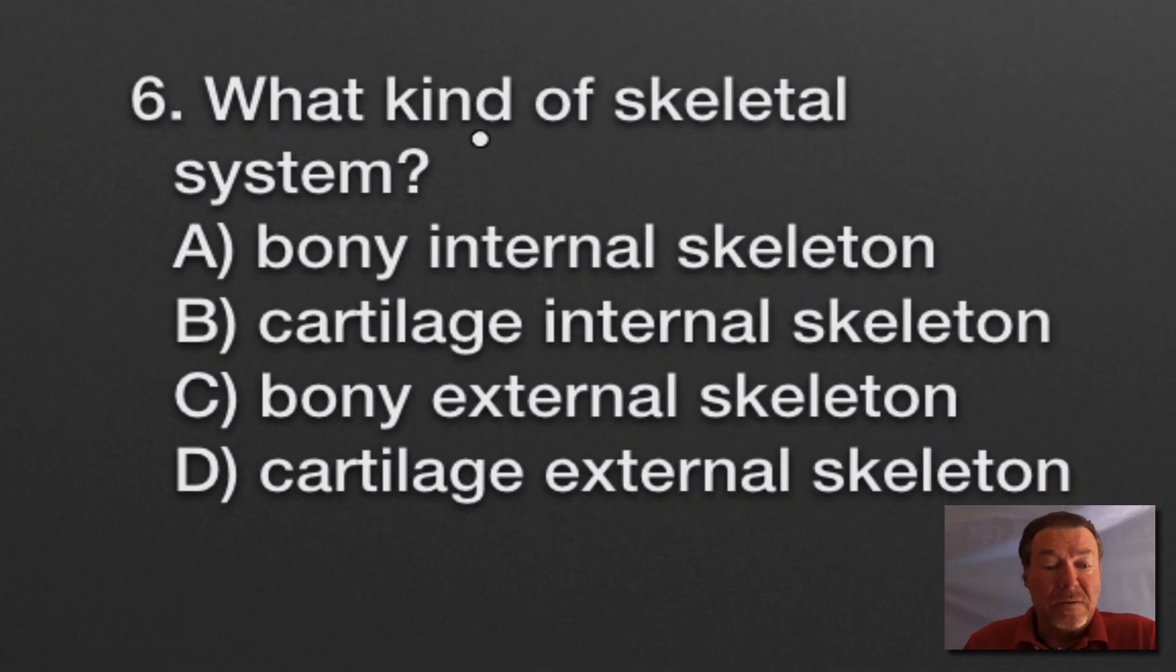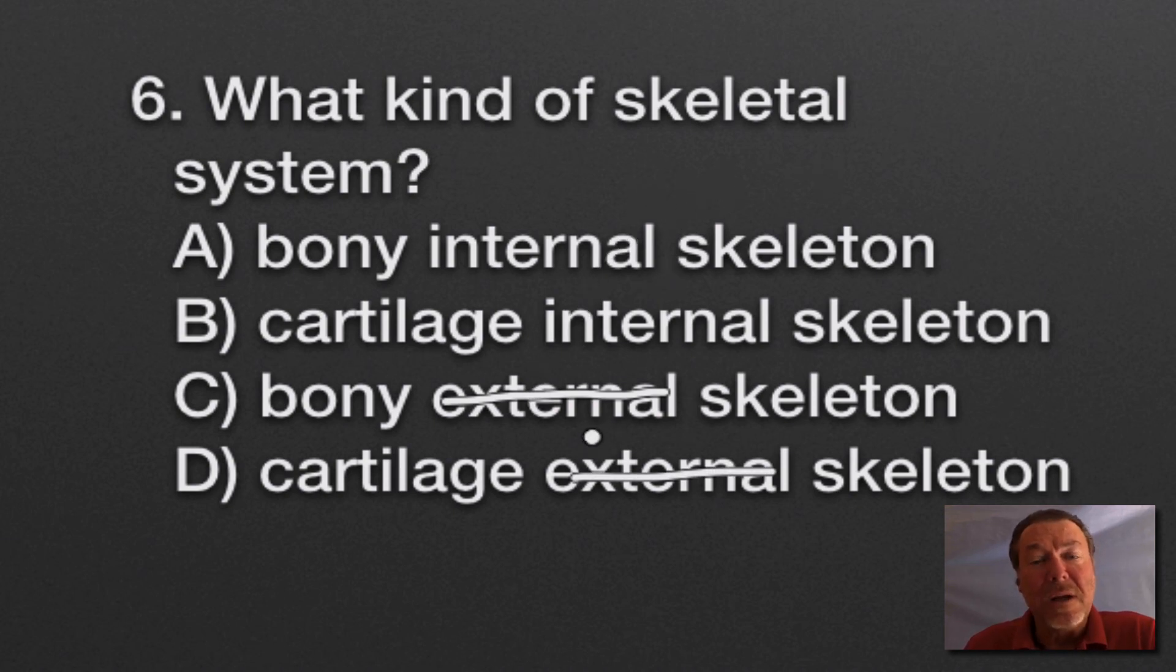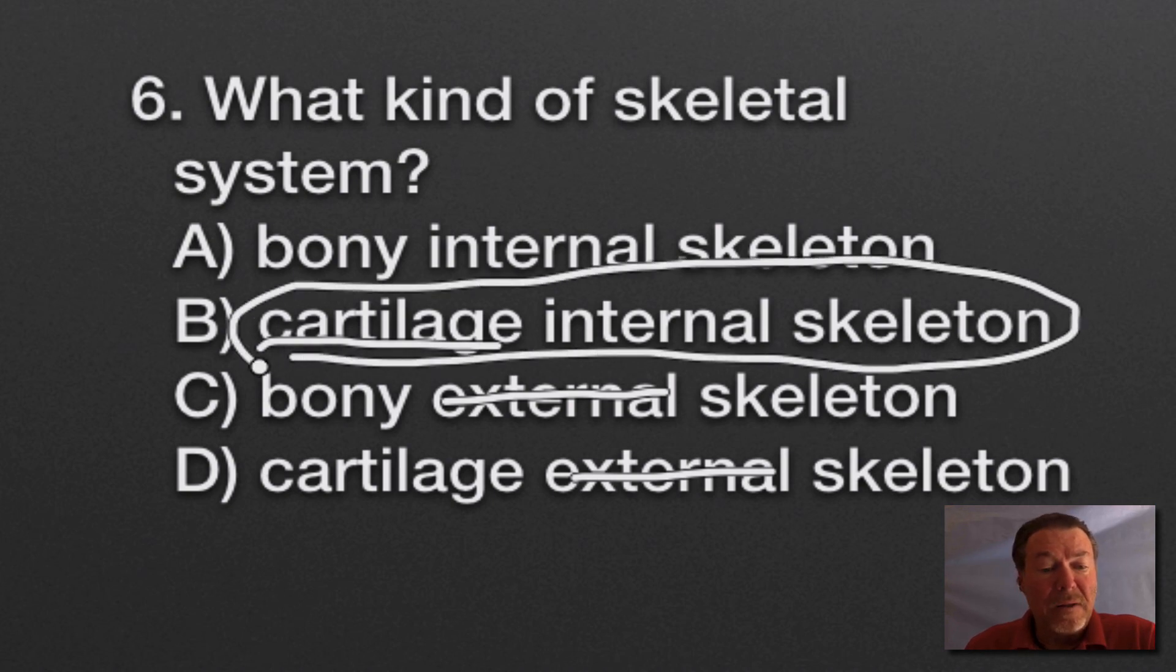What kind of skeletal system does a shark have? You can rule out external skeleton. Things with external skeletons are the arthropods, insects, spiders, crustaceans, crabs, and lobsters. So it has an internal skeleton. What makes the difference between a shark and regular fish is the fact that it has cartilage. The answer is B, internal skeleton made of cartilage like your ear or nose. If it was bony it would be Osteichthyes, but this is Chondrichthyes, a cartilaginous skeleton.